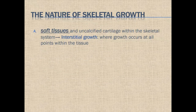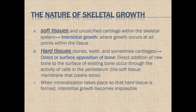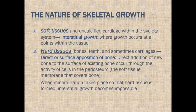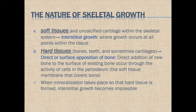In terms of soft tissue, growth occurs mainly by interstitial growth — growth occurring at almost all points simultaneously. This is not possible for calcified tissues. In hard tissues, once calcified, we cannot have interstitial growth; instead we have direct or surface apposition of bone — bone remodeling. Bone remodeling is selective areas of bone resorption and apposition causing change in size and shape.